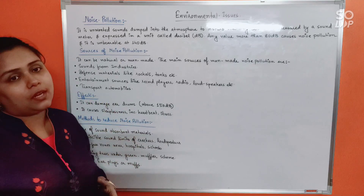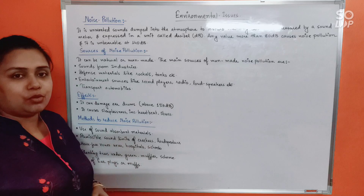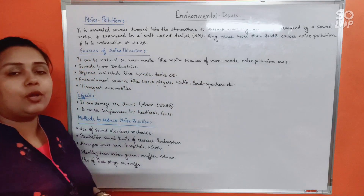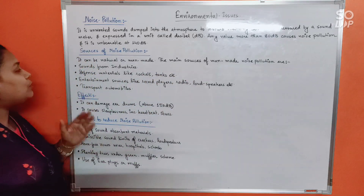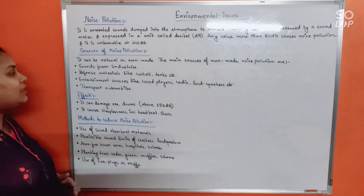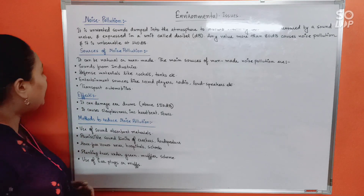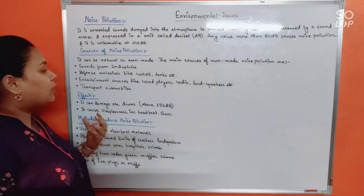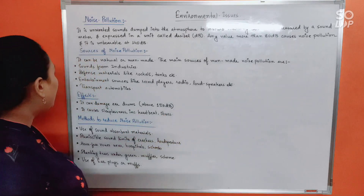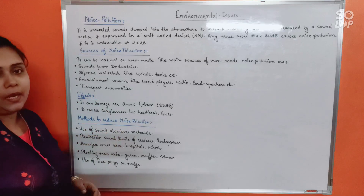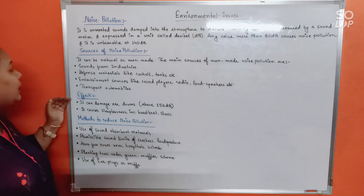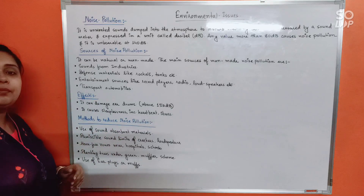The main sources of manmade noise pollution are sounds from industries, different machinery like rocket stamps, entertainment sources like record players, radio, and loudspeakers, and transport automobiles. The effects of noise pollution include permanent damage to eardrums at sound levels above 150 decibels, as well as sleeplessness, increased heartbeat, and stress in human beings.